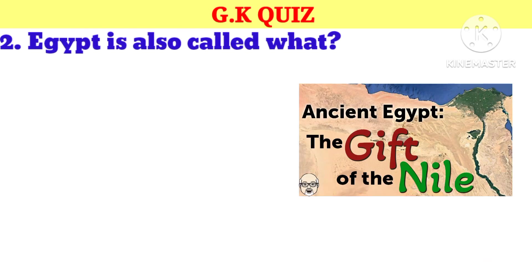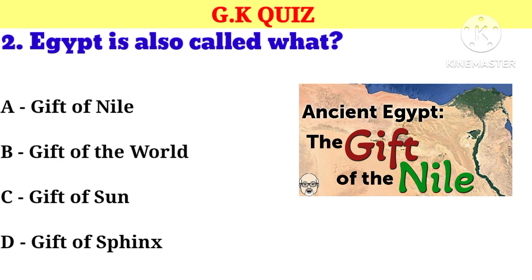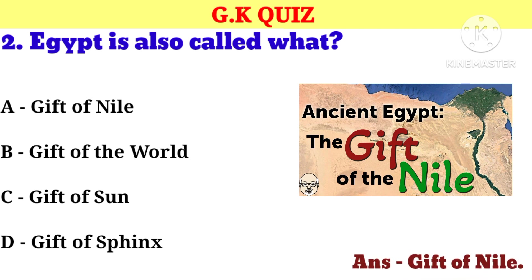Question number 2. Egypt is also called what? Your options: A. Gift of Nile, B. Gift of the world, C. Gift of sun, D. Gift of Sphinx. And now your correct answer is Gift of Nile.